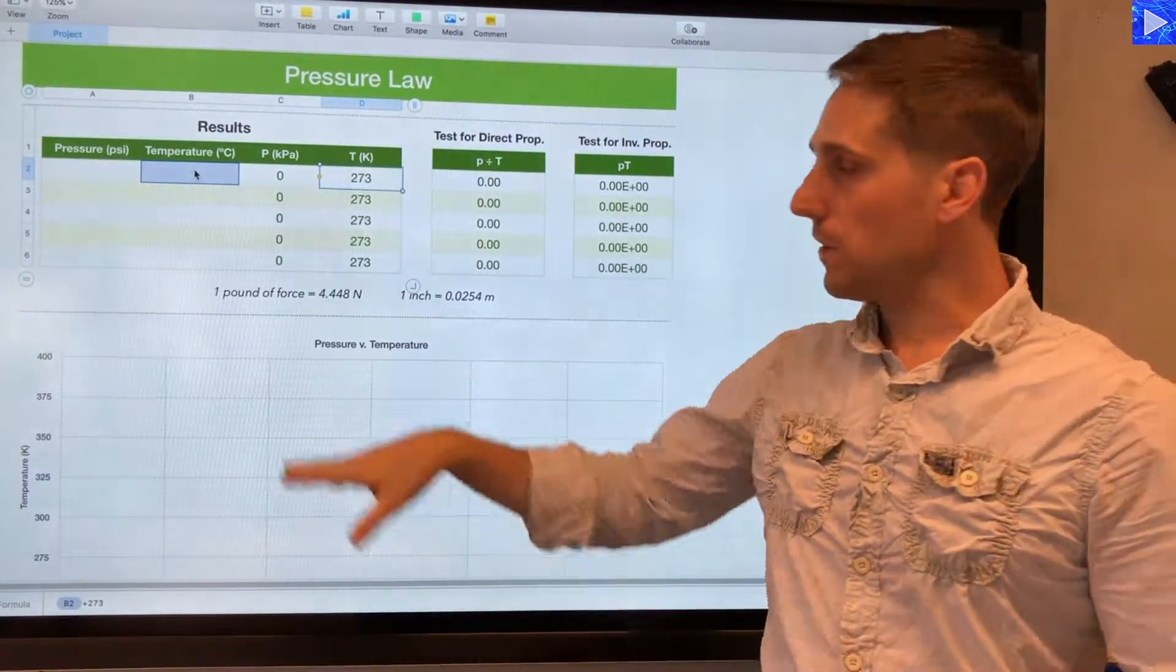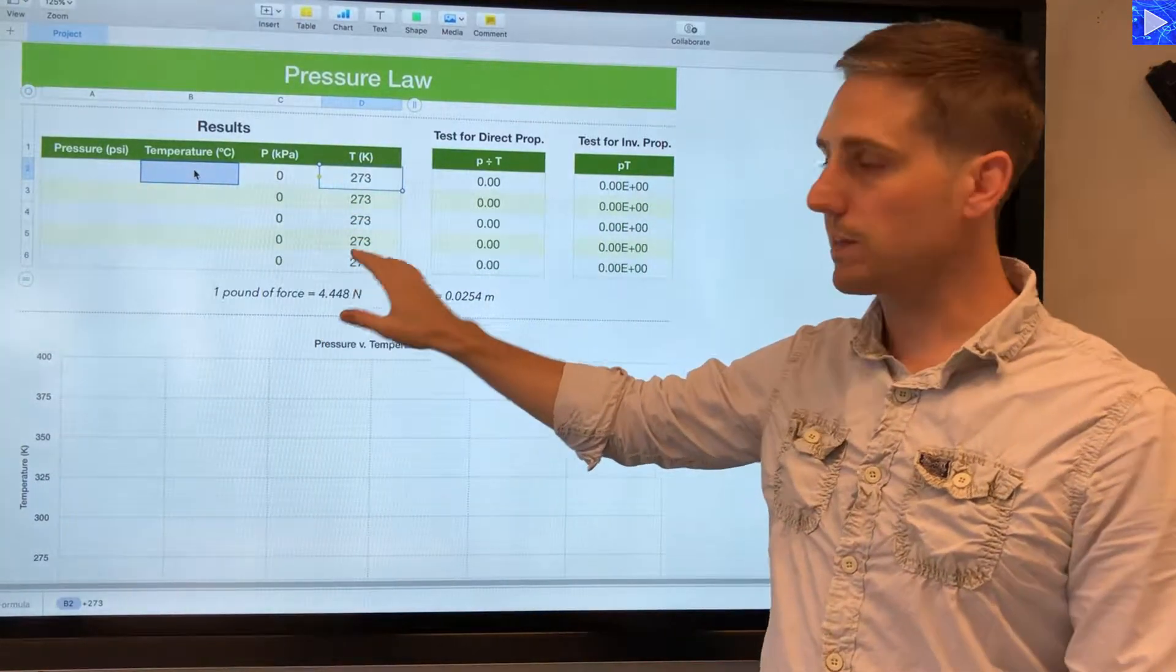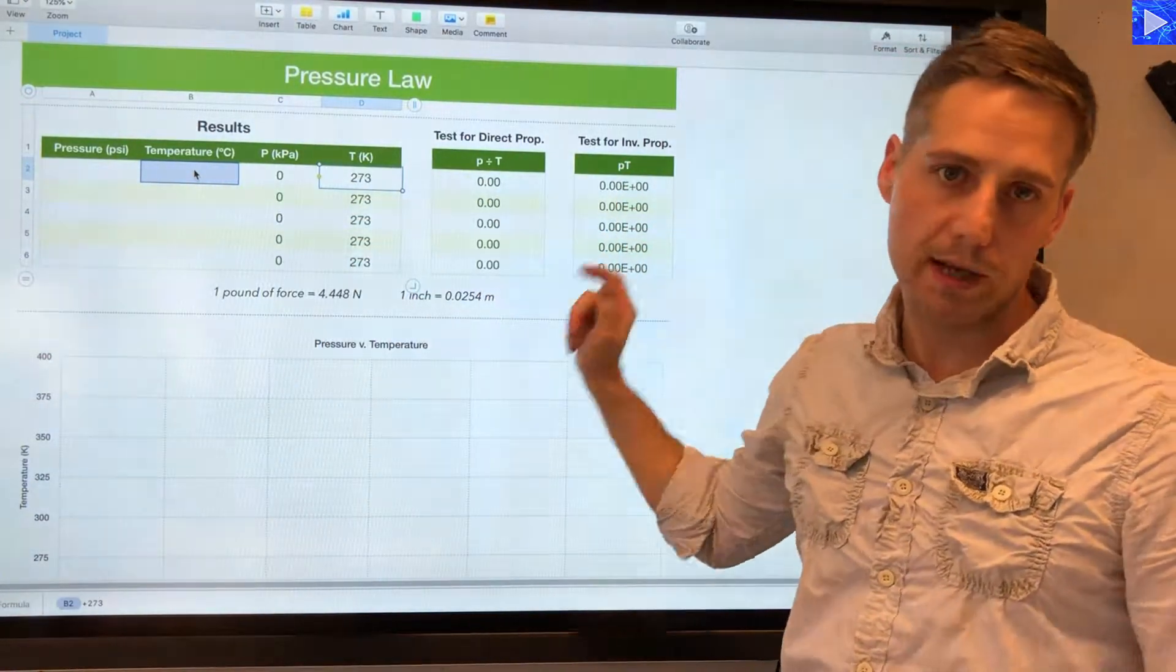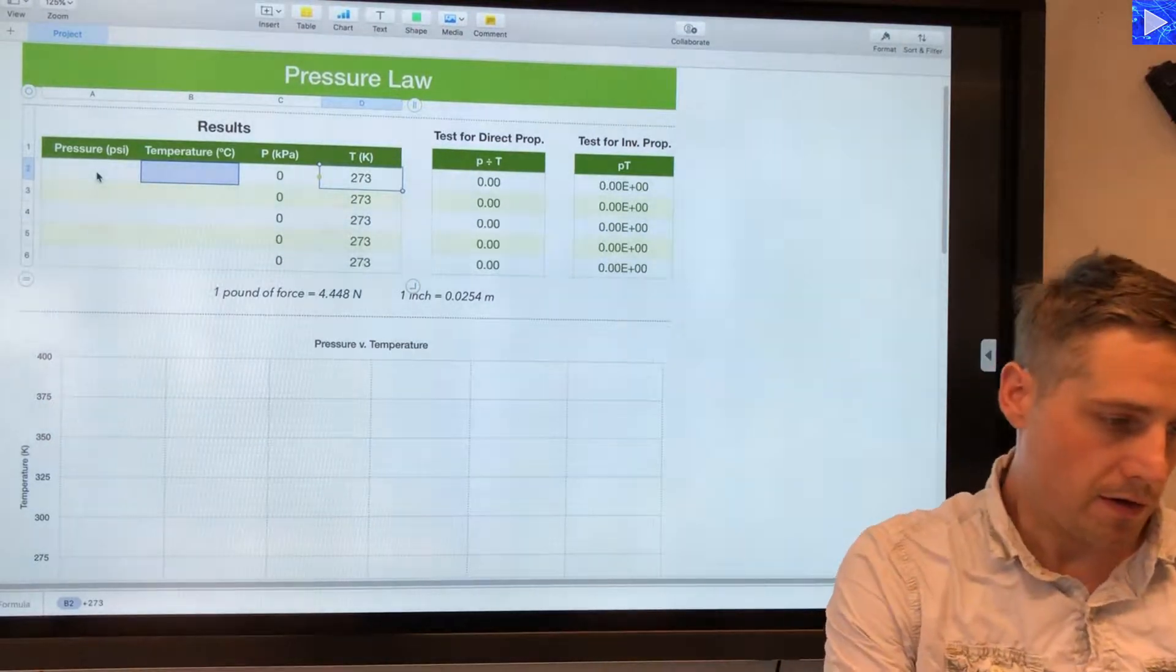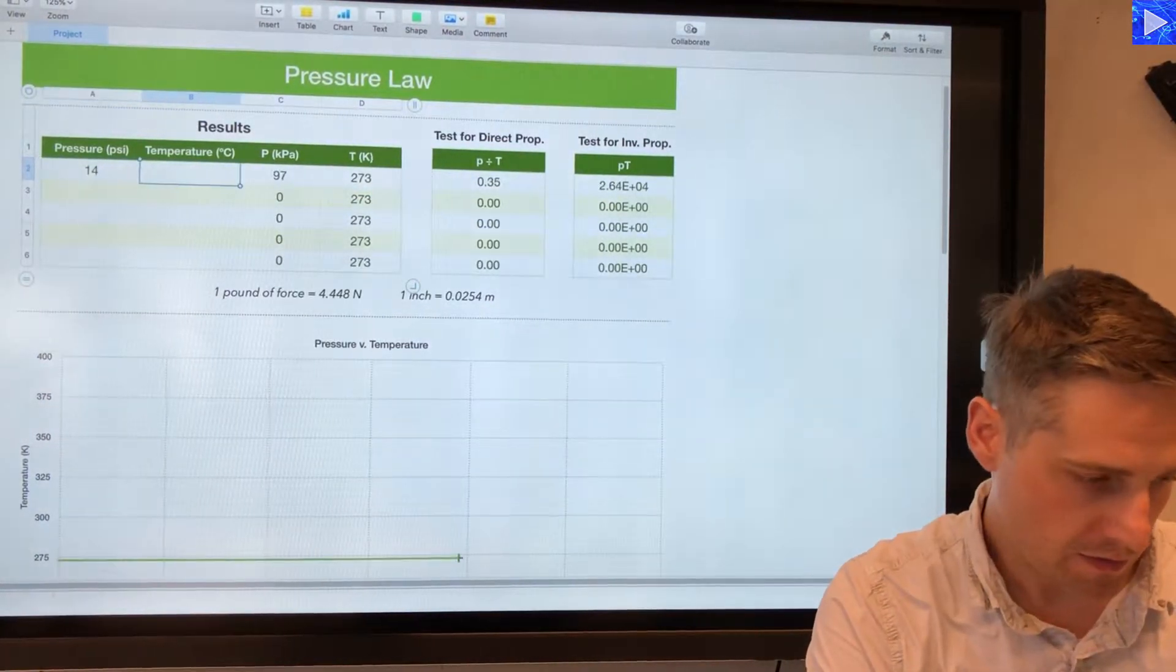What I'll do first is put the data in here and you'll see those calculations performed automatically, and then we'll move on to explaining what's happening here. So the first result I have: 14 psi and that was 5 degrees C.